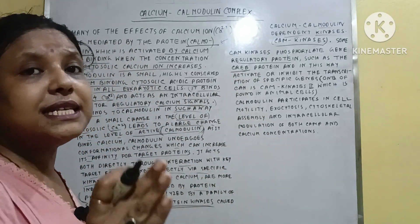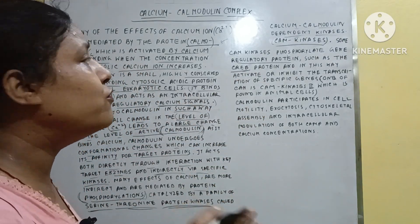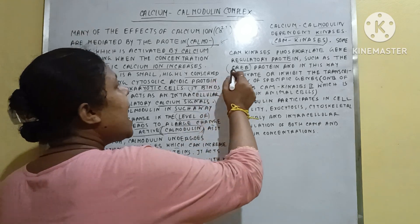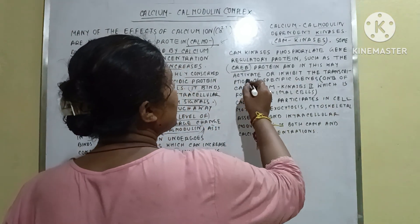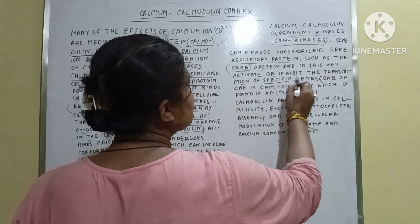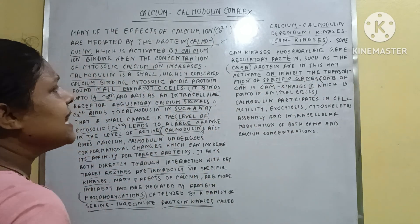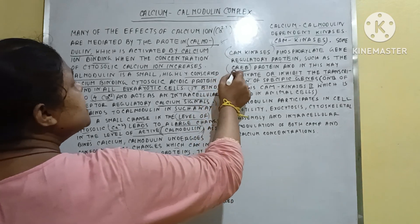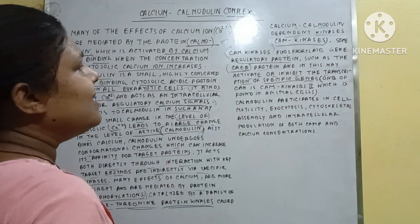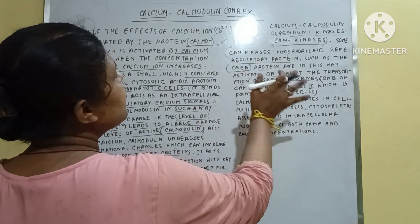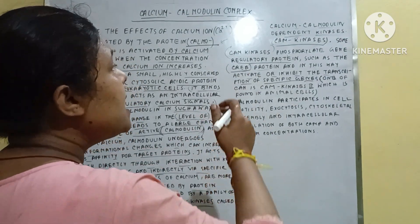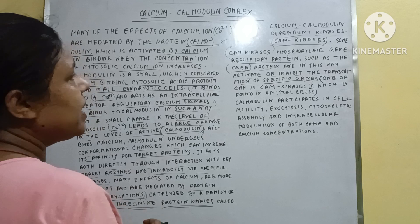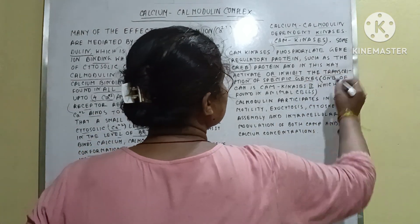Some CAM kinases phosphorylate gene regulatory proteins such as CREB — the full form of CREB has been explained in a previous video. In this way, they activate or inhibit the transcription of specific genes. The CAM kinase phosphorylates the CREB protein and in this way can activate or inhibit this CREB protein, also affecting the transcription process — transcription may be activated or inhibited.